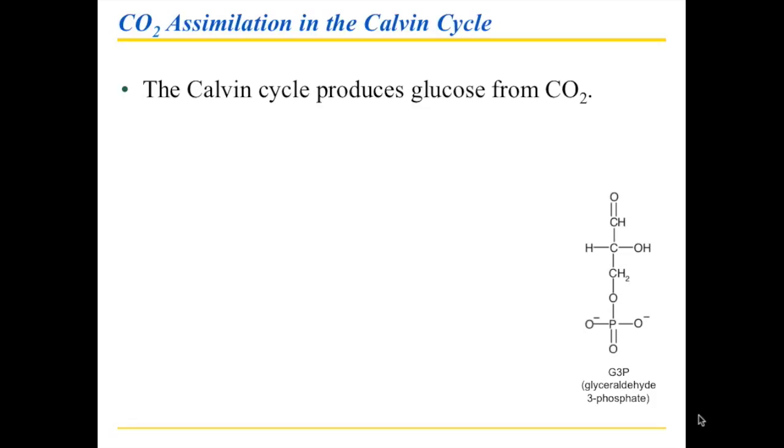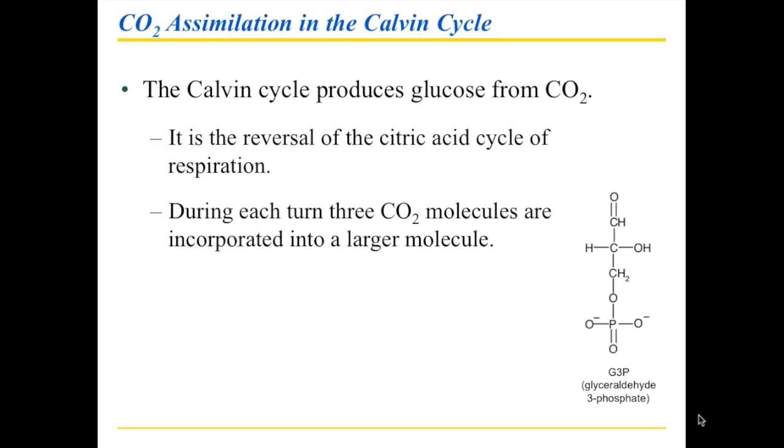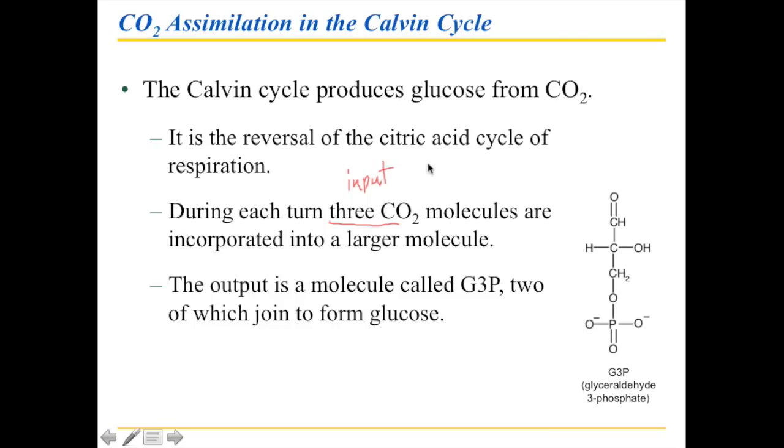We produce glucose from carbon dioxide, so obviously we need to reverse what we do in the citric acid cycle. In order to do this, we have three carbon dioxide as input, plus we're going to need as input the ATP and the NADPH. That's what gives us the energy.